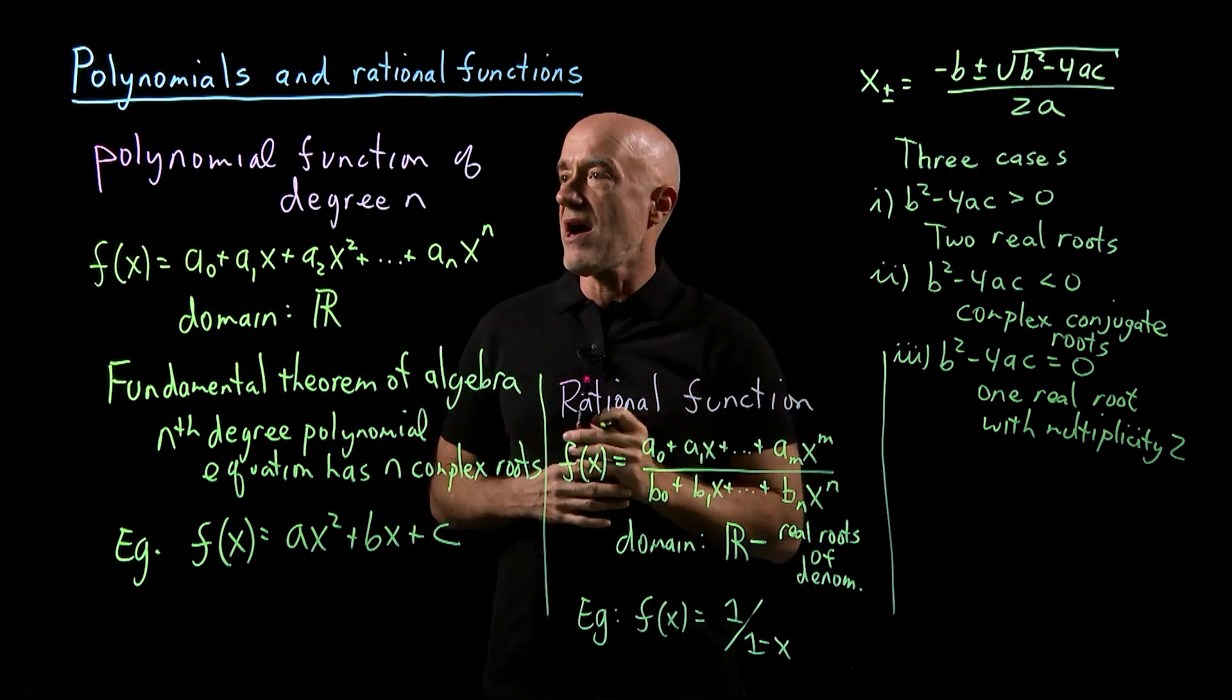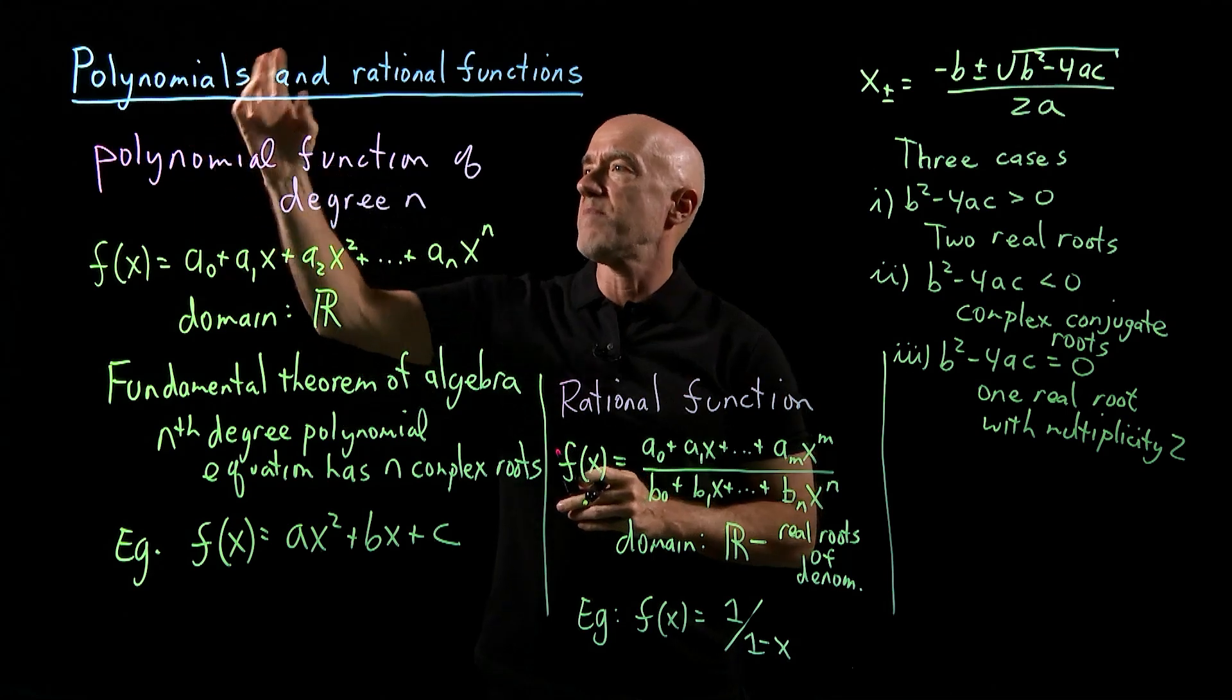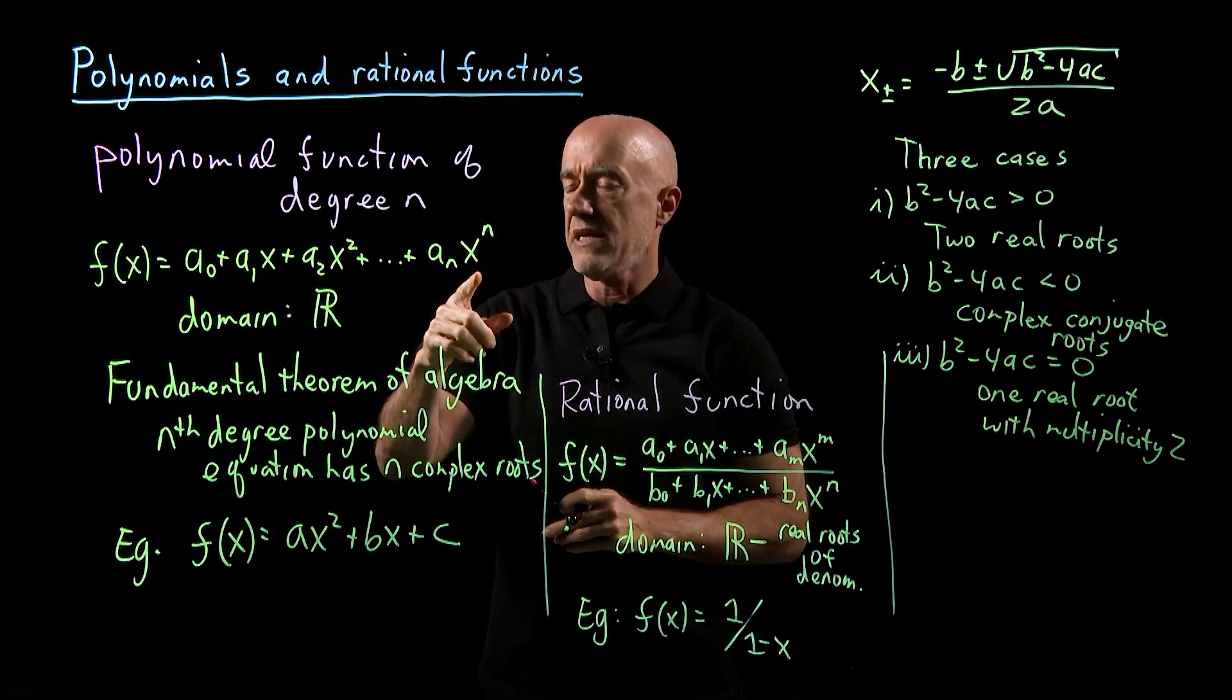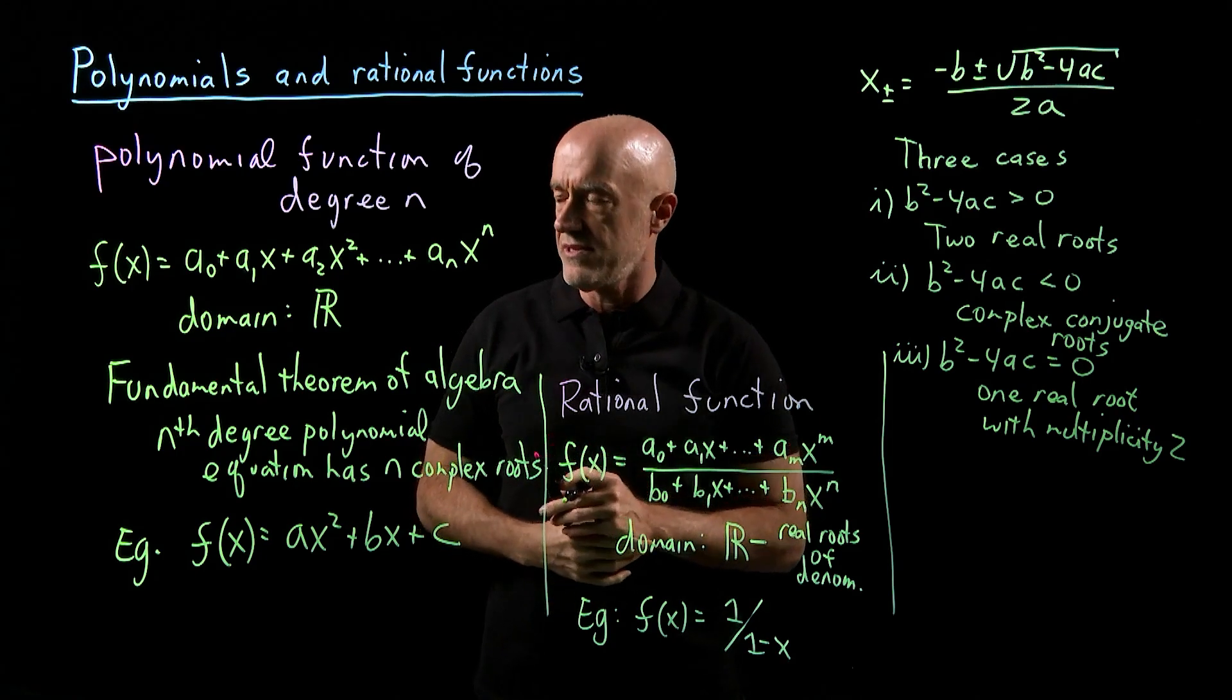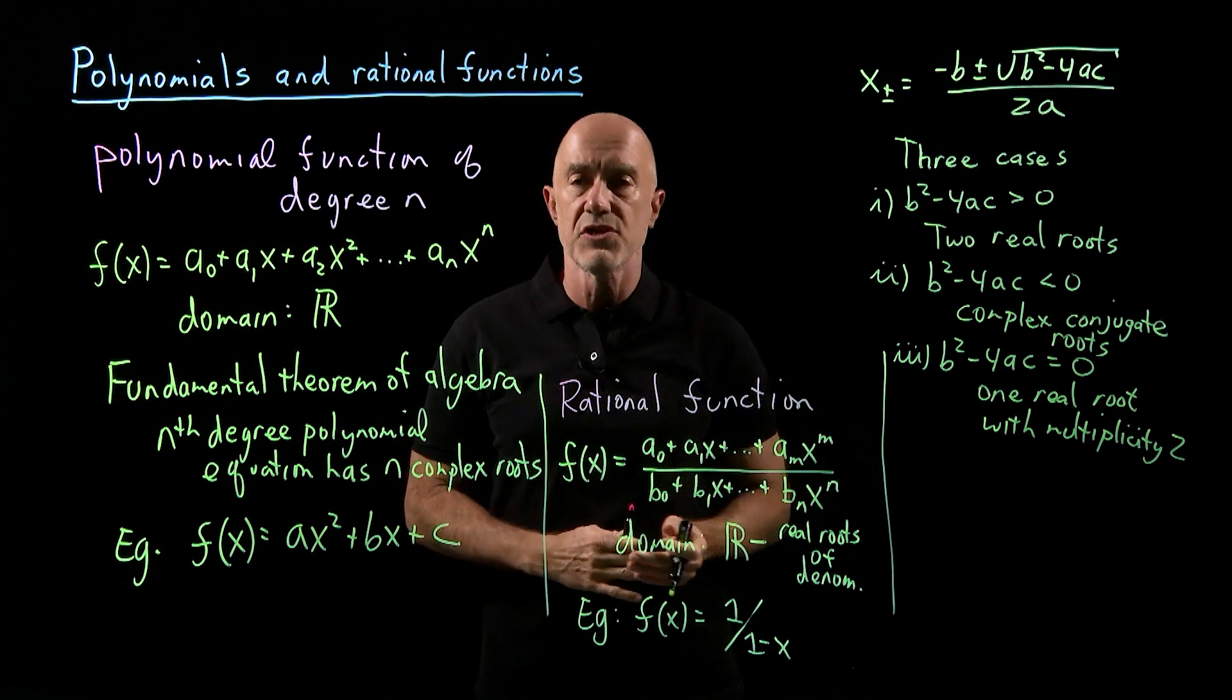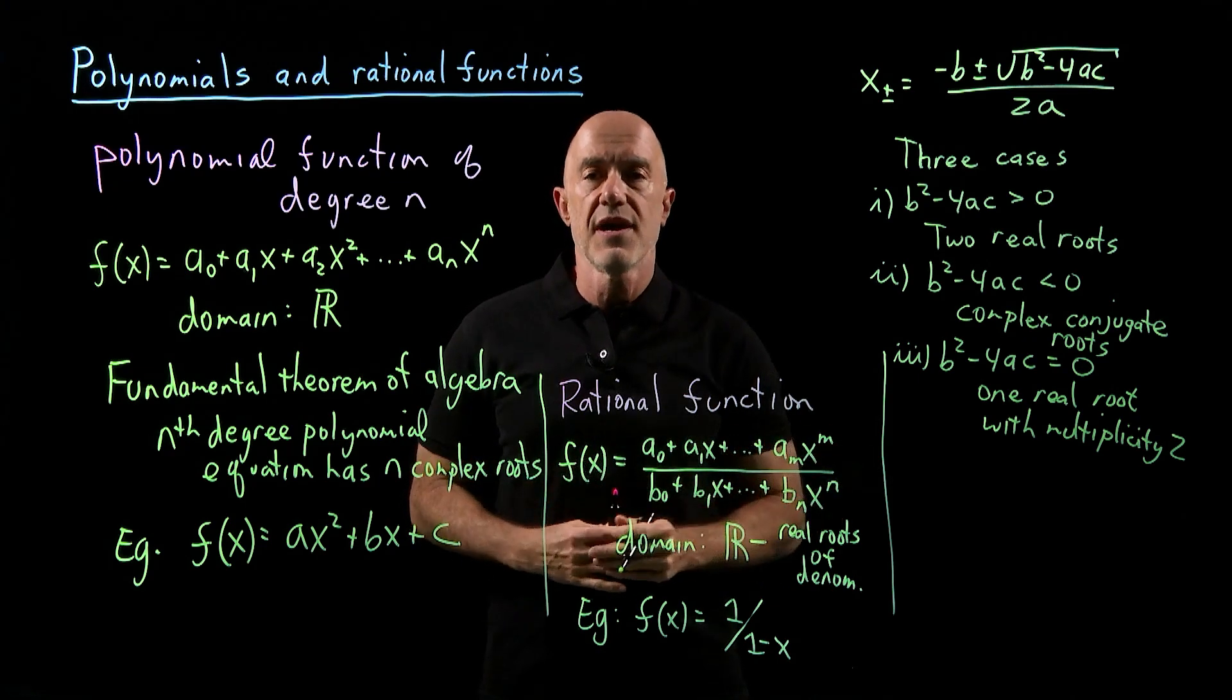Let me summarize. I'm introducing now, or reviewing probably for you, two types of functions: the polynomial functions and the rational functions. The polynomial function can be up to degree n, meaning that it has a term aₙxⁿ, where aₙ is not equal to 0. The domain is the whole real numbers. And the rational function is the division of two polynomial functions. Its domain is the entire real numbers excluding the real roots of the denominator.